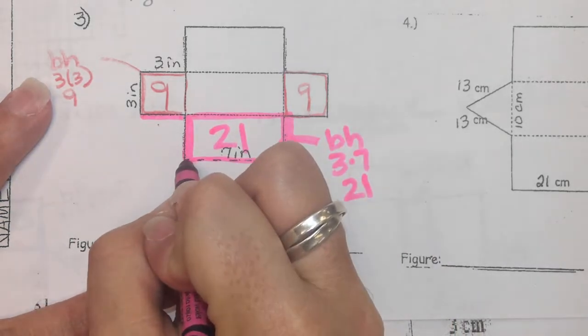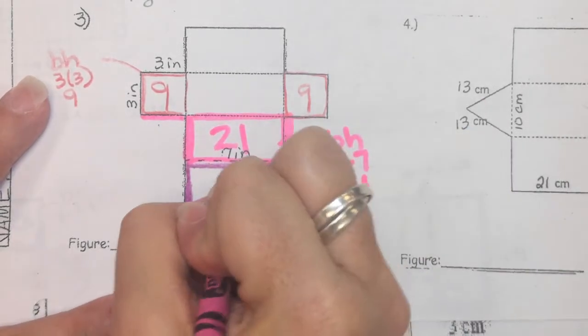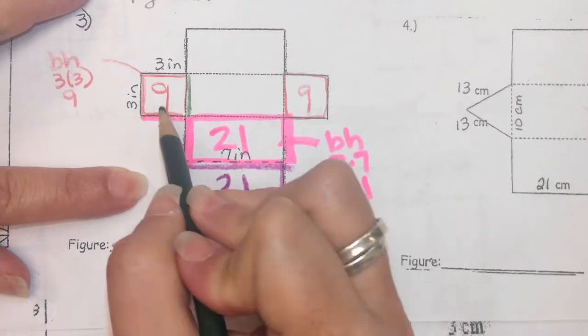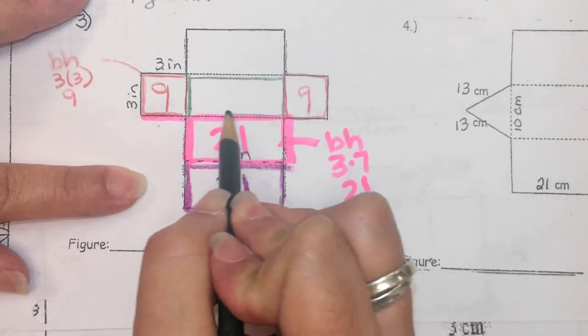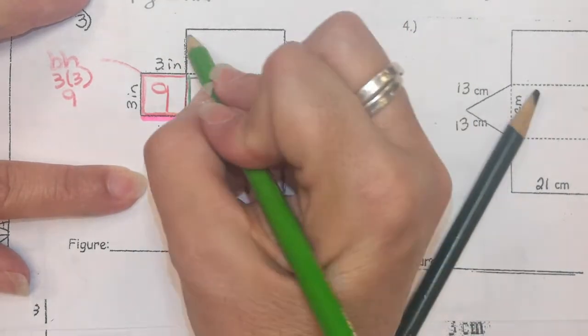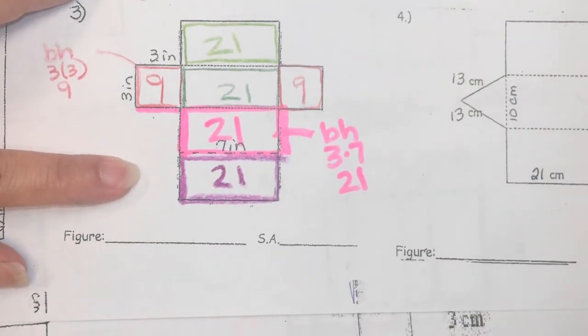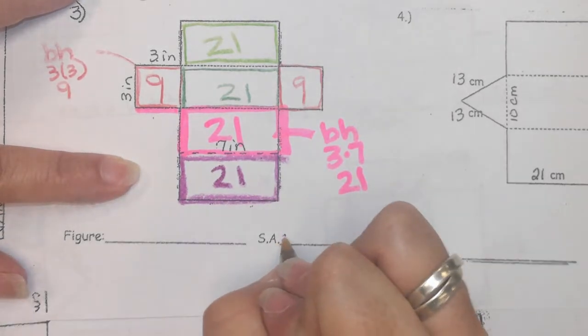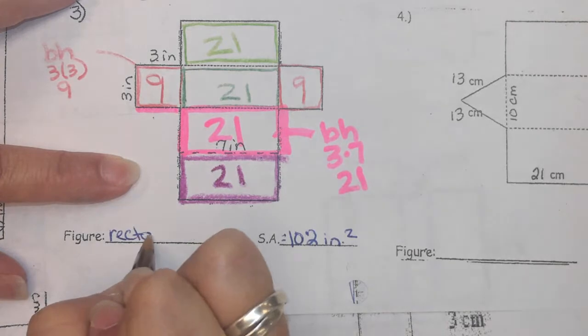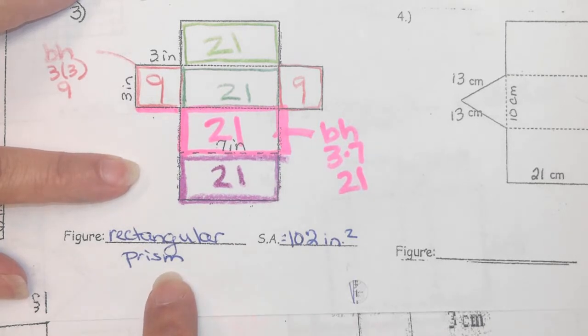This one is a 3 by 3, and I know that the formula is base times height, which is 3 times 3, times not added, which is 9. This one is also 3 by 3, which is 9. This rectangle right here is a 3 by 7, 3 times 7 is 21. Show me the formula, show me the numbers you're working with. You want to check each one.